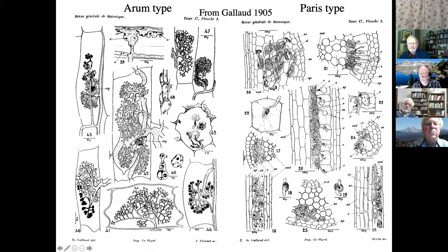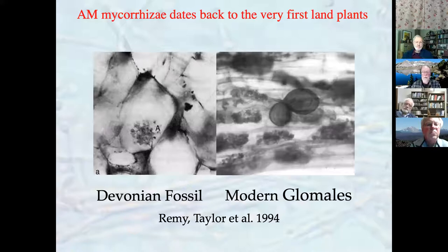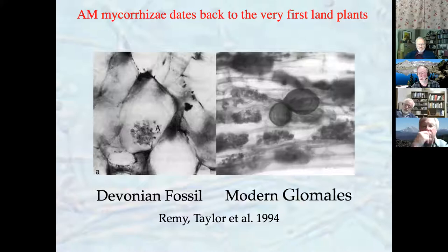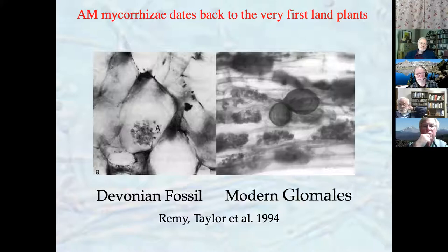AM fungi also make little spores inside the plant root called vesicles. A fossil from the Rhynie Chert, at the top of the Devonian, contains an arbuscle, showing these mycorrhizal fungi go back to the very earliest land plants. There is good molecular evidence now that all plants were initially associated with arbuscular mycorrhizal fungi — they have the genes necessary to interact with these fungi — and the ones no longer arbuscular mycorrhizal have basically given up that ability. Land plant colonization was probably facilitated by this mycorrhizal interaction.